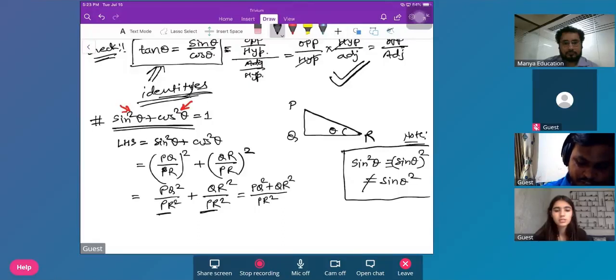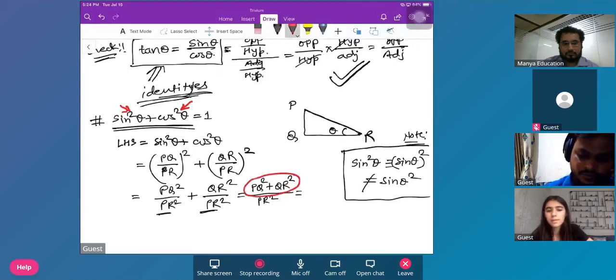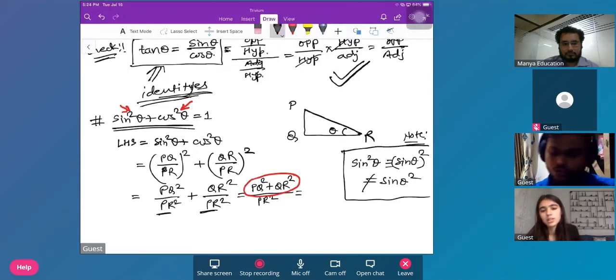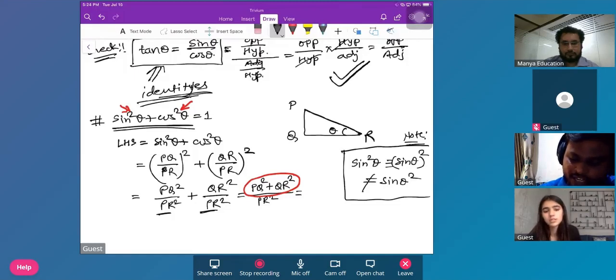Simply add the numerator. Now how would you simplify this TQ squared plus QR squared? How would you simplify this? Would you take Q out or... look at the diagram. Look at the diagram. TQ squared plus QR squared.